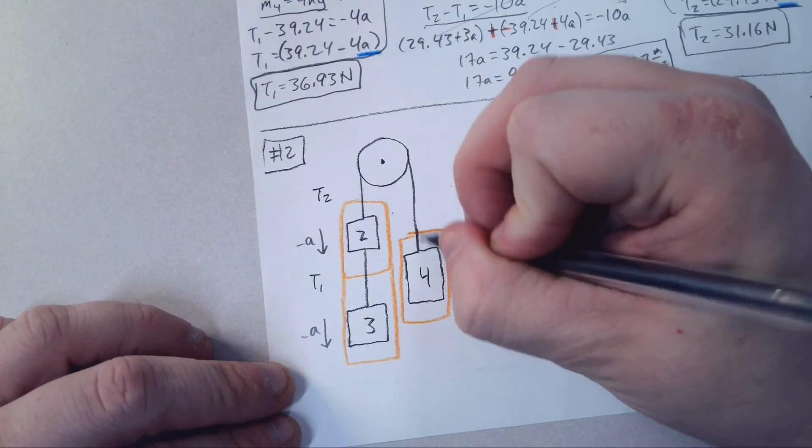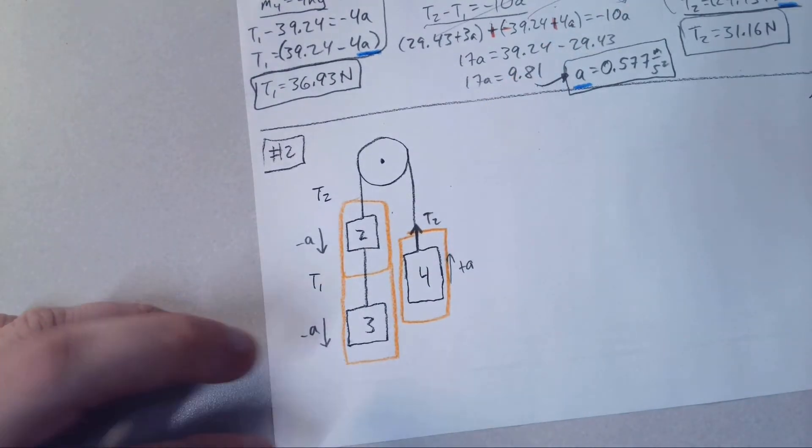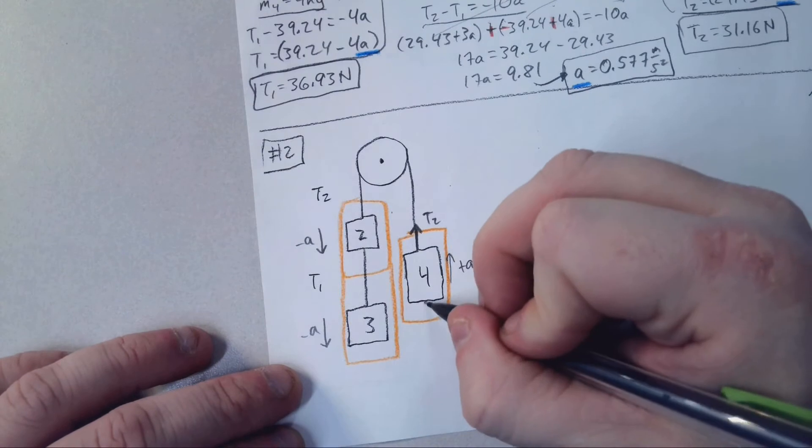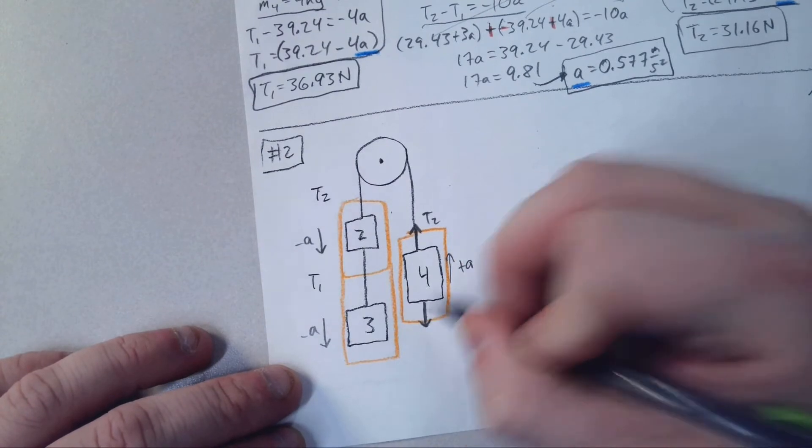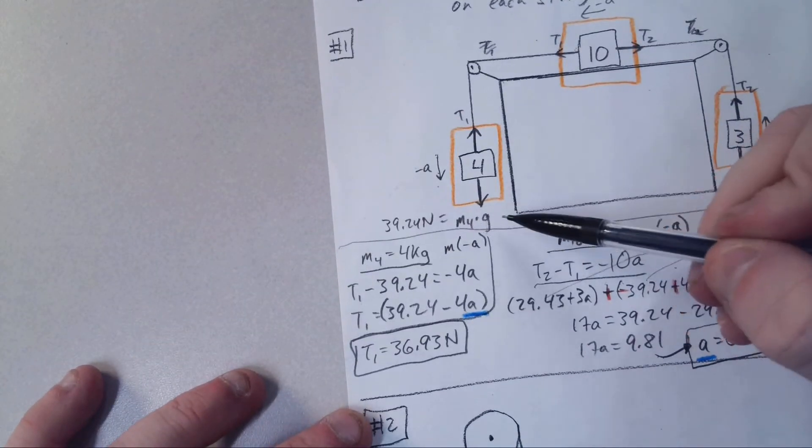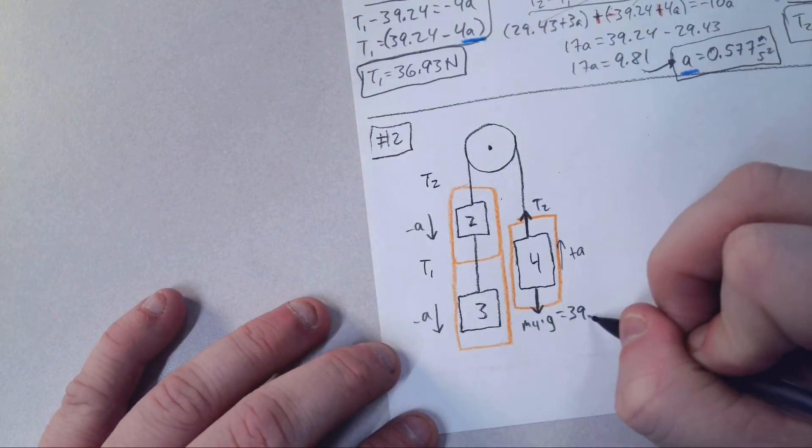To hold up the four kilograms here, we have tension two. Remember, pulley just changes direction of the tension. It does not change the value of it. Down we would have the weight, which is M4 times G. Four times 9.81 is 39.24, so go ahead and write that there.